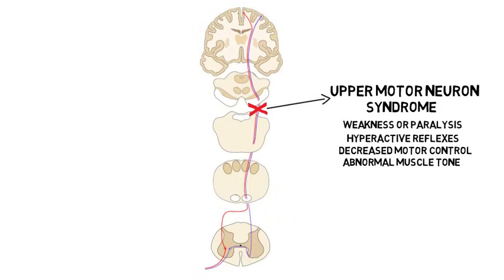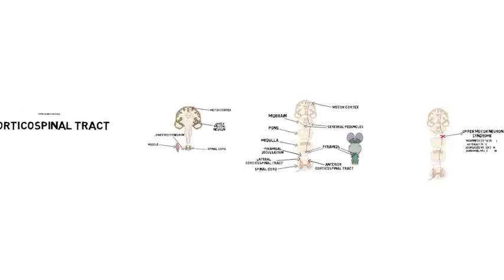Over time, patients may regain the ability to make crude movements, but fine finger movements like writing or typing may remain impaired, suggesting the corticospinal tract is especially important for these types of movements.